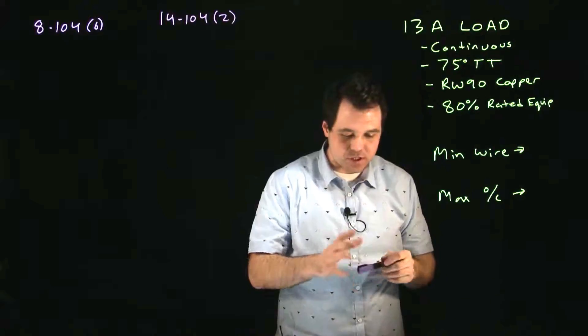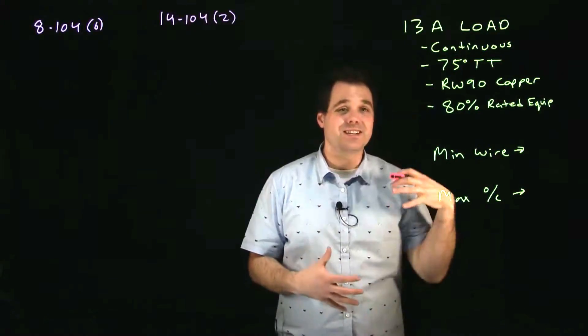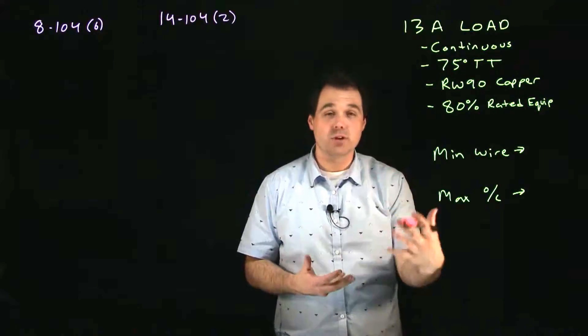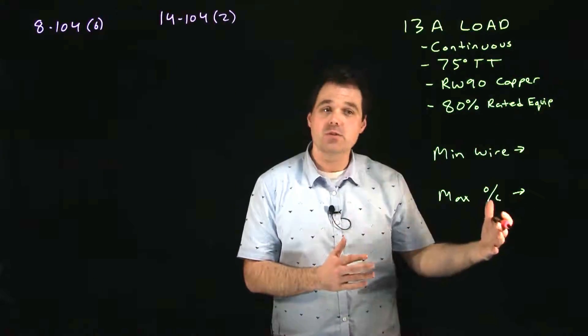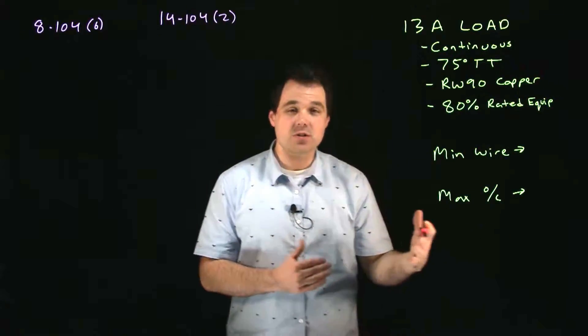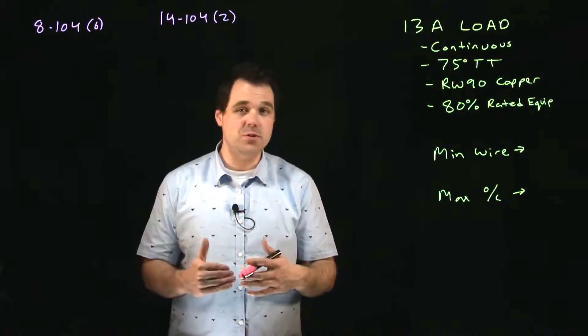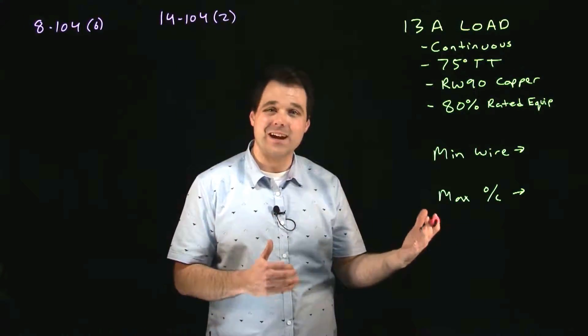So as we go through this process, first of all 8-104 sub rule 6 says our load cannot exceed 80 percent the rating of the breaker, which means we have a load we are going to need to upsize the breaker to allow for all that additional heat. When we upsize the breaker we're also going to need to upsize the wire because the breaker is there to protect the wire. If the wire is too small the breakers no longer protecting that wire.